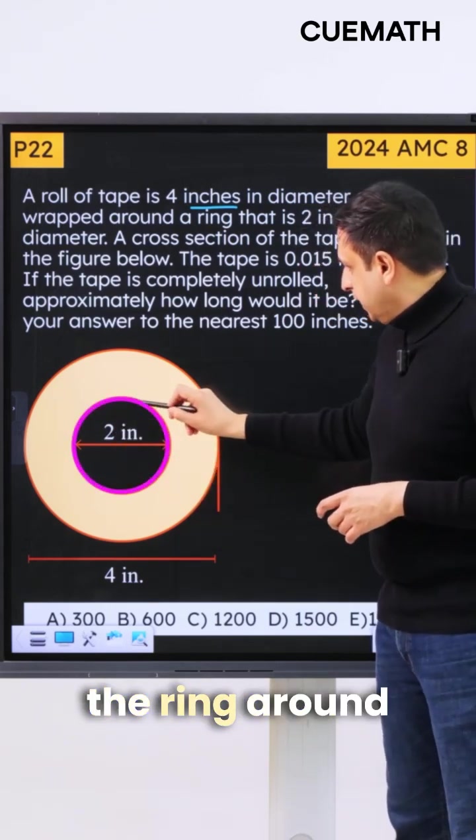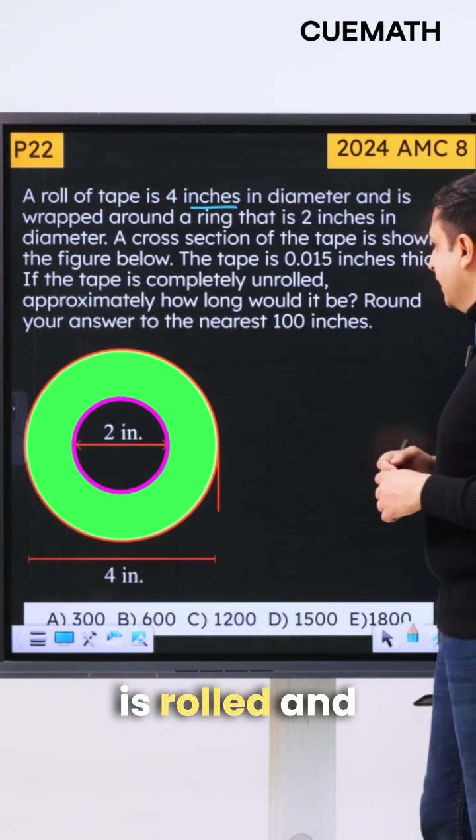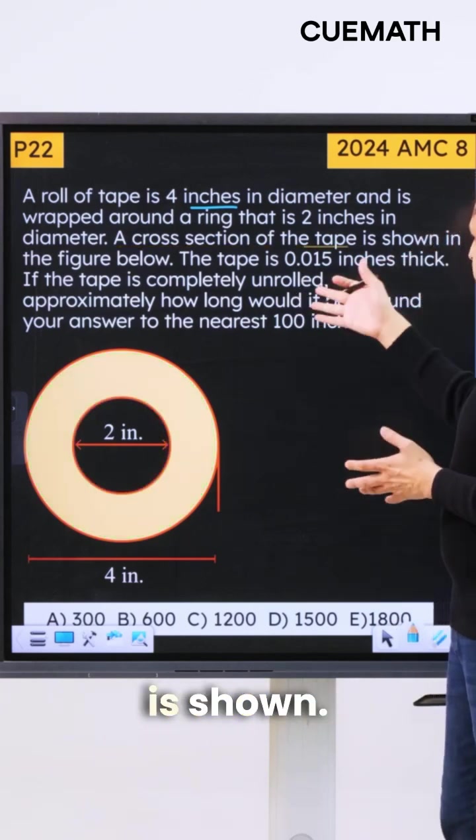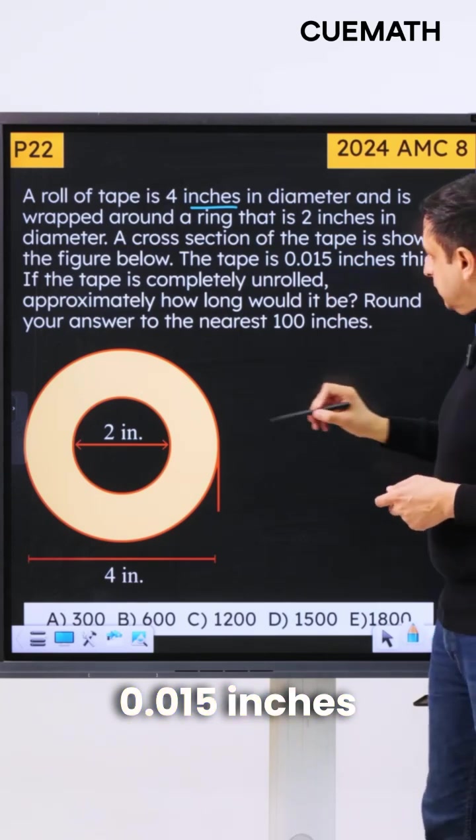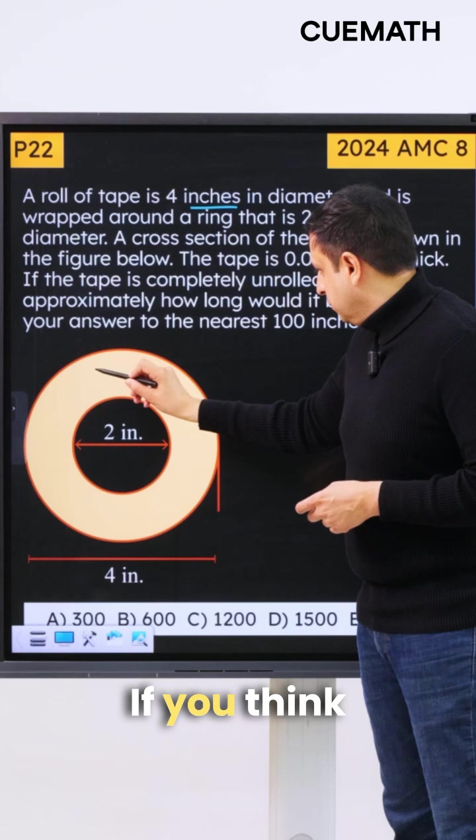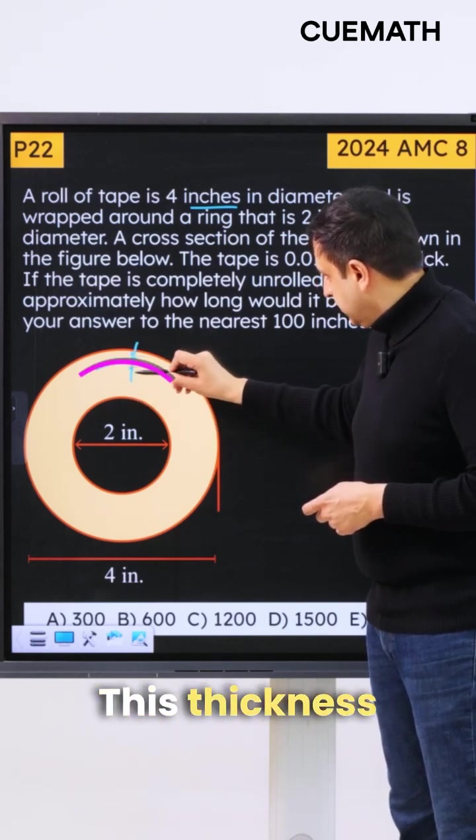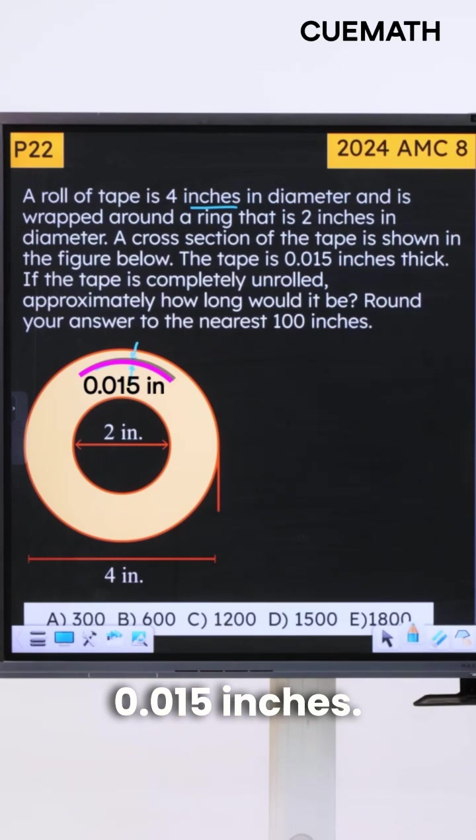So this inner circle is actually the ring around which the tape is rolled, and a cross section of the tape is shown. The tape is 0.015 inches thick. So the tape, if you think about each roll of the tape, this thickness is 0.015 inches.